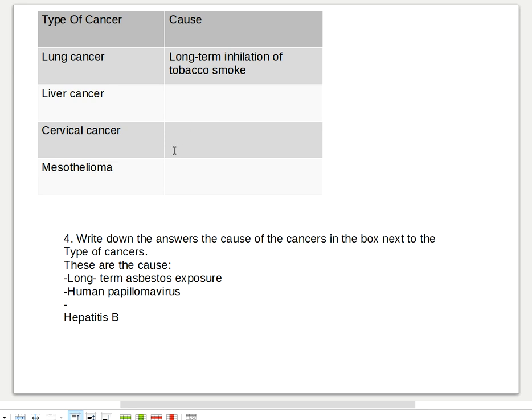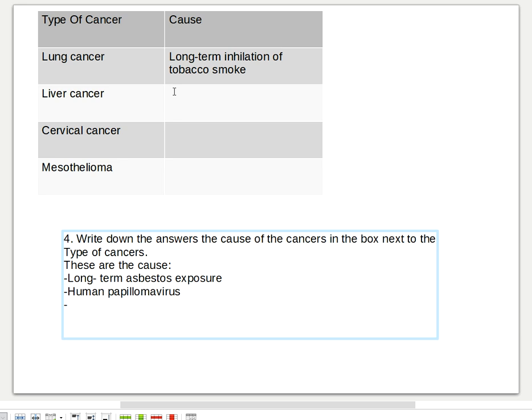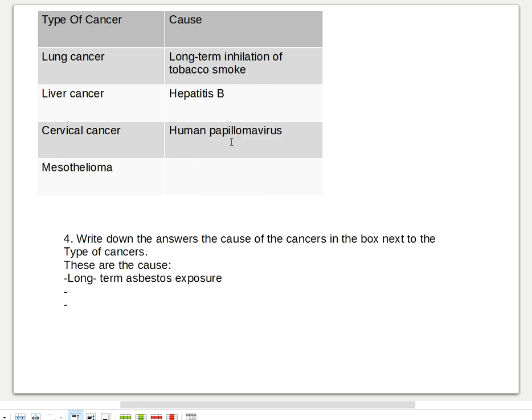Liver cancer is hepatitis B. Cervical cancer is human papillomavirus. And the last one is mesothelioma, so that's the answer there.